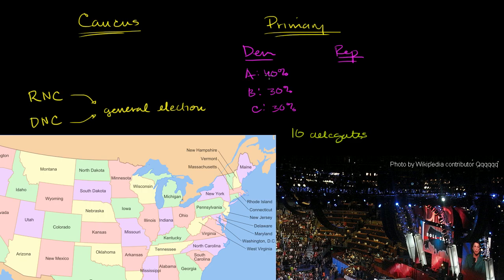On the Democratic side, these delegates will go on to the national convention and represent the different candidates proportionally. So out of these 10 delegates, 40% or four will represent candidate A, three will represent candidate B, and three will represent candidate C when they go to the national convention.